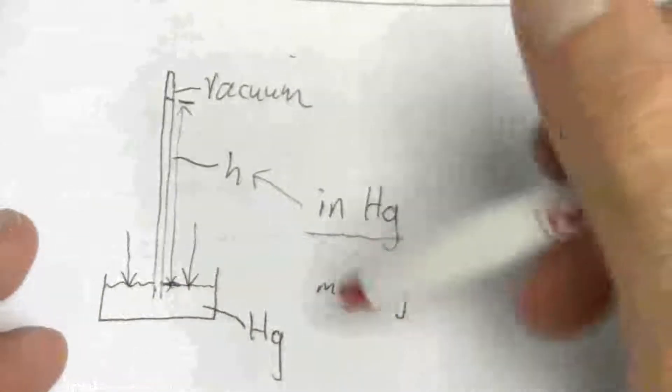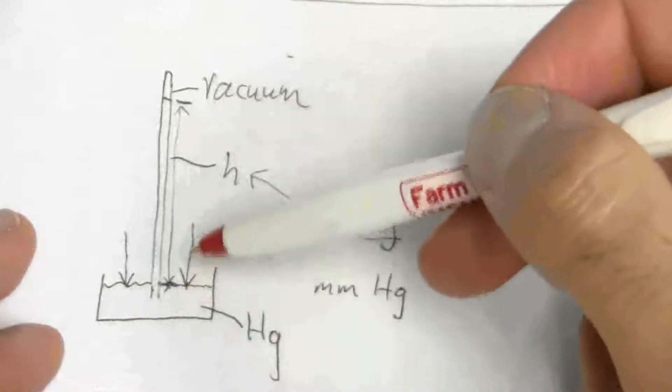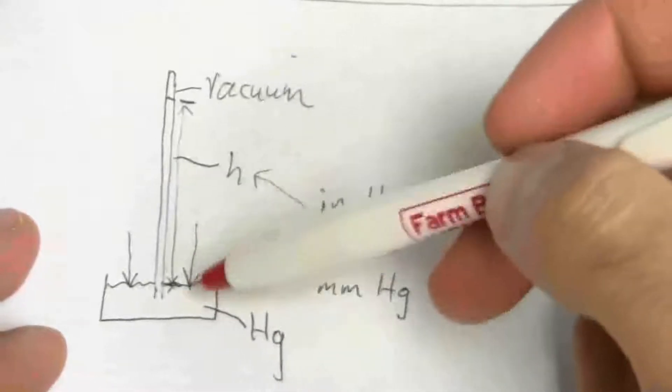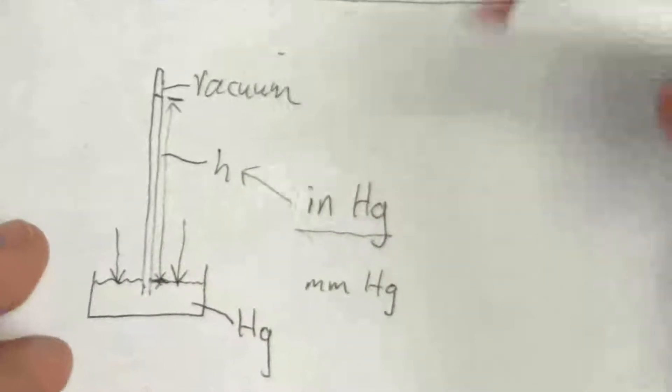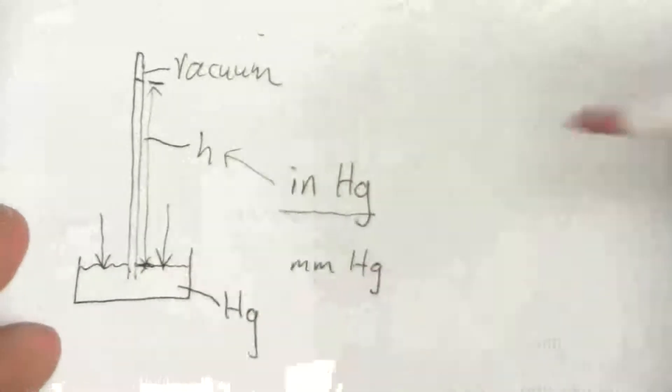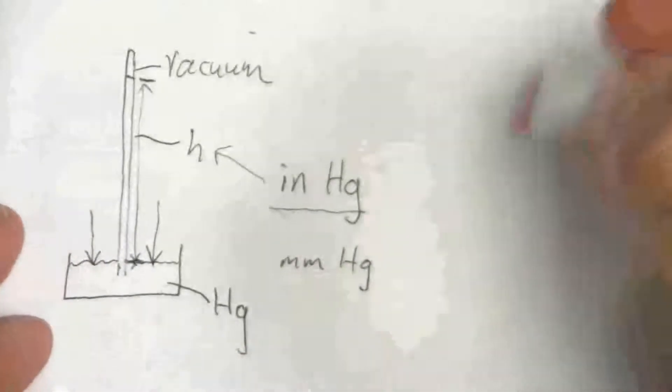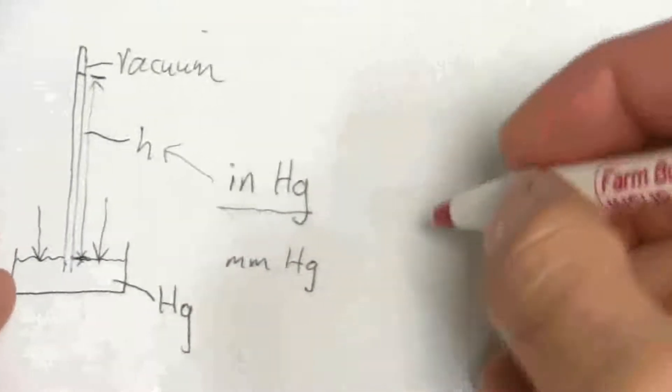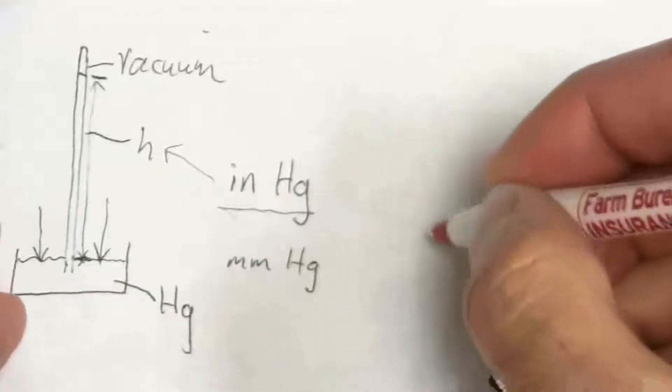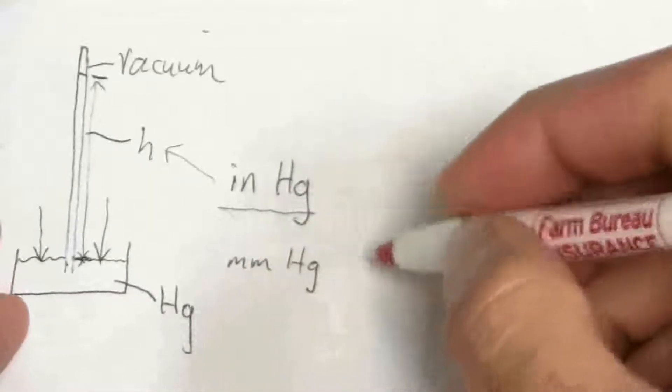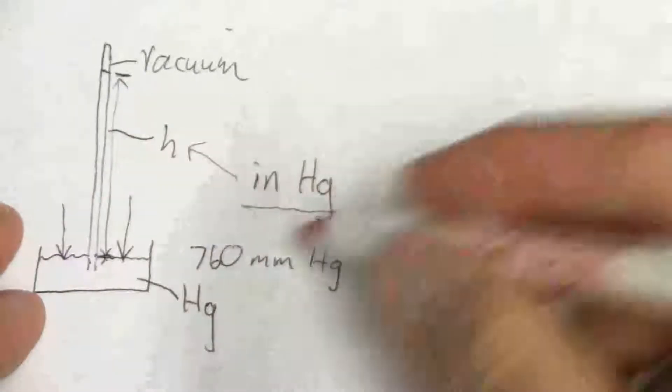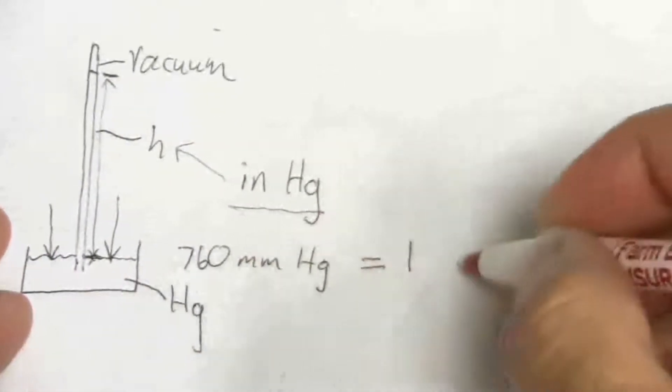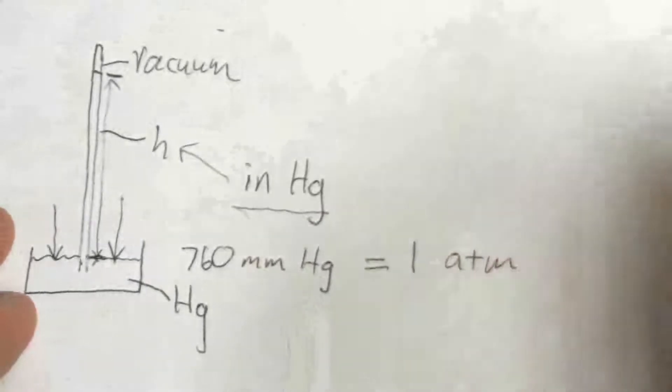But most of the time, we use mercury because we usually talk about pressures near atmospheric pressure, and millimeters of mercury gives us a more reasonable number to work with there. In fact, it turns out we have units of millimeters of mercury.